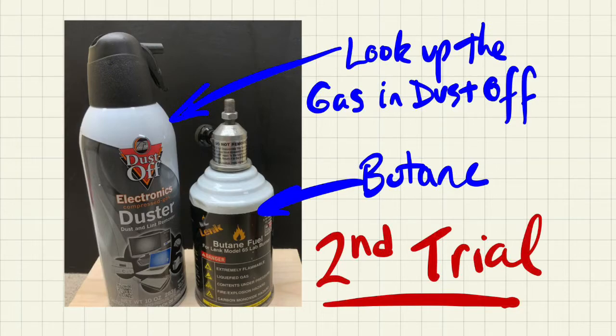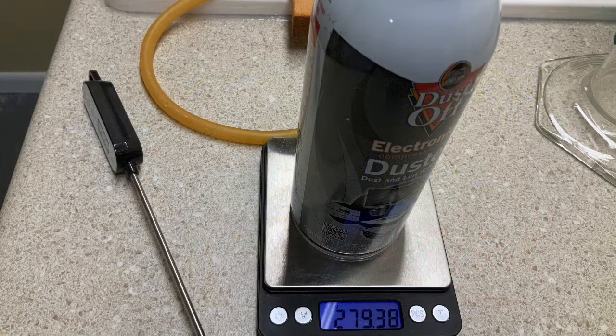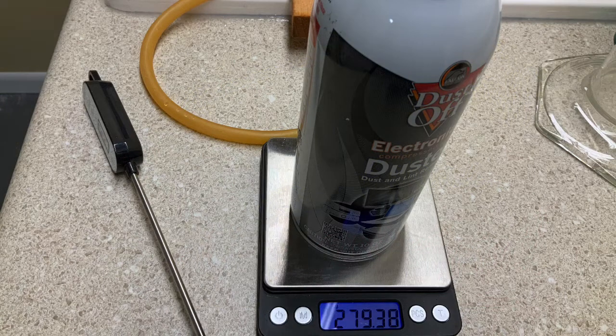And get your data table ready for a second trial. Here comes the gas canister. A quick Google search will let you know what gas is most likely in a dust off canister.